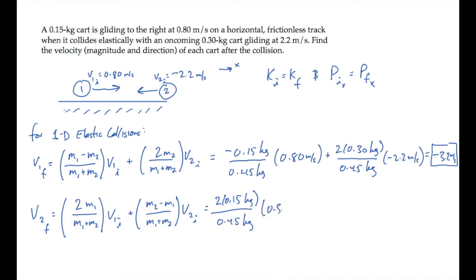In the same way, substitute numbers into the expression for v2f, the velocity of cart two after the collision. And you find that its final velocity is negative 0.20 meters per second. This means that both carts are moving to the left after the collision, the first one at 3.2 meters per second, and the second one at 0.20 meters per second.